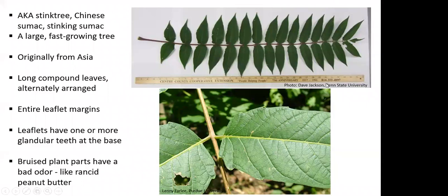Tree of Heaven actually goes under several names. The scientific name is Ailanthus altissima. It's also called a stink tree, Chinese sumac, or stinking sumac. It is a large and fast-growing tree, but doesn't have a really long lifespan — oftentimes less than 80 to 100 years. It has very long, pinnately compound leaves with many leaflets, although the leaf length can vary quite a bit from tree to tree and depending on growth stage.